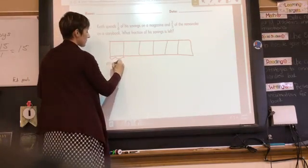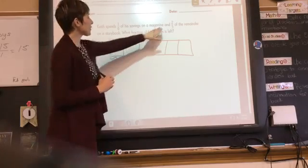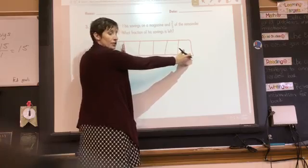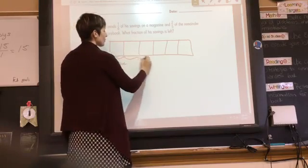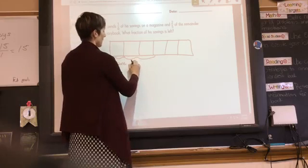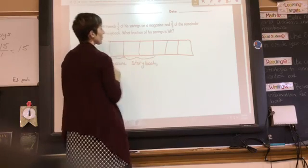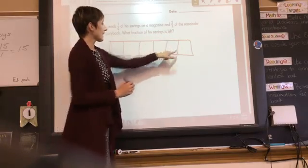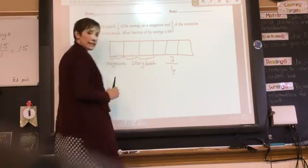I will label that one-sixth for my magazine. And two-fifths of the remainder. This is my remaining portion. It's already broken down into fifths. Two of those fifths are spent on a storybook. The question is what fraction of his savings is left? I can see that I have three out of the six pieces left.